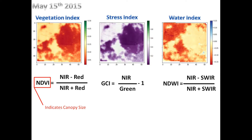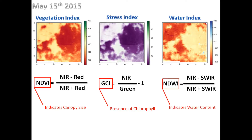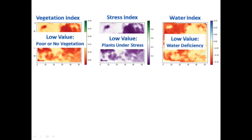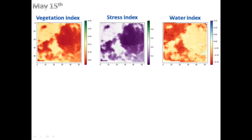We evaluated three indexes: Normalized Difference Vegetation Index (NDVI), Green Chlorophyll Index (GCI), and Normalized Difference Water Index (NDWI). A low value on NDVI means lack of or poor vegetation, for GCI it means plant stress, and for NDWI it means water deficiency in the farm.